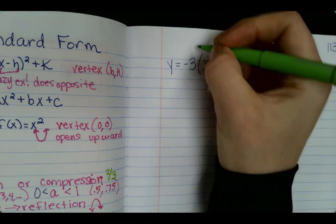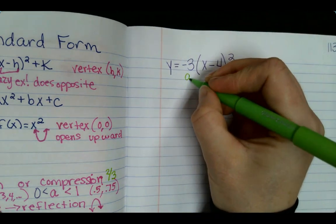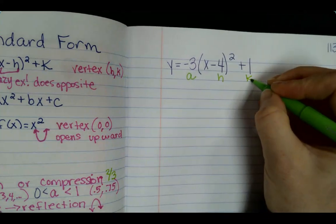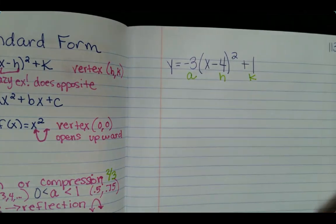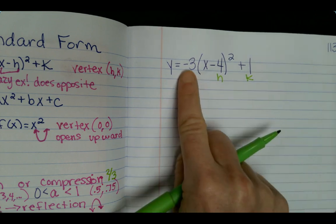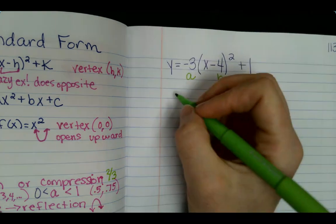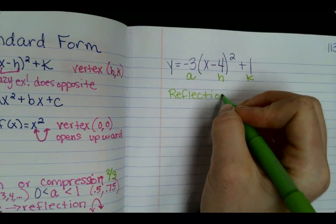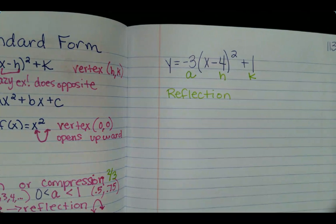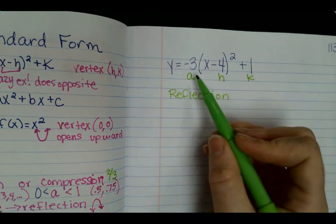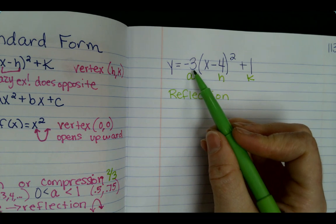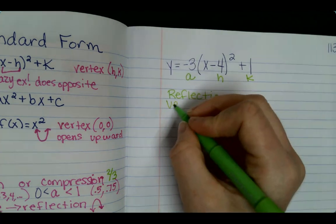Let's go ahead and write a, h, and k, and then we're going to write what each one means. So this is a negative, so the first thing that we know is that it's a reflection because it's negative. And then a is three, so that means it's going to be a vertical stretch.